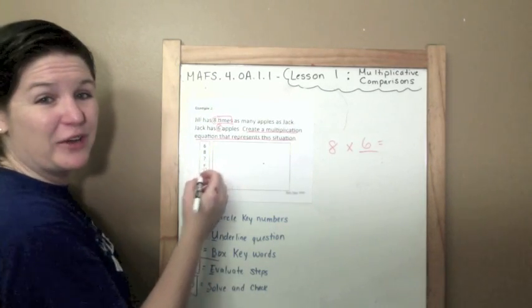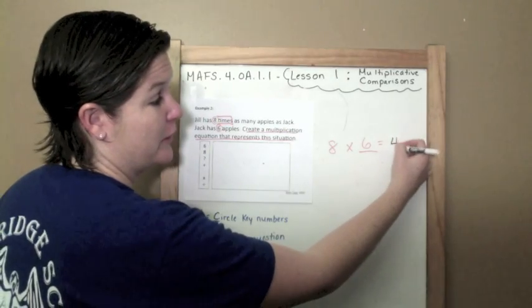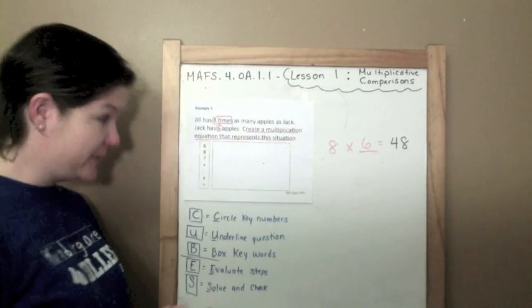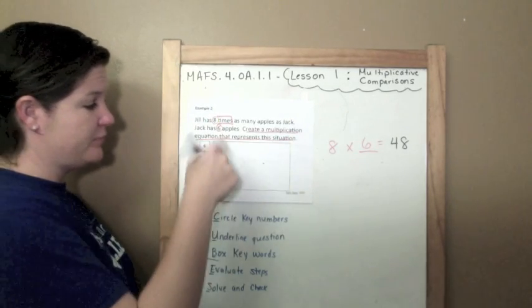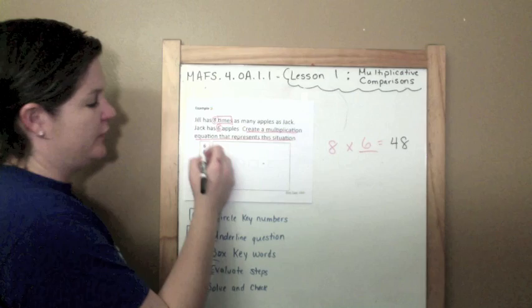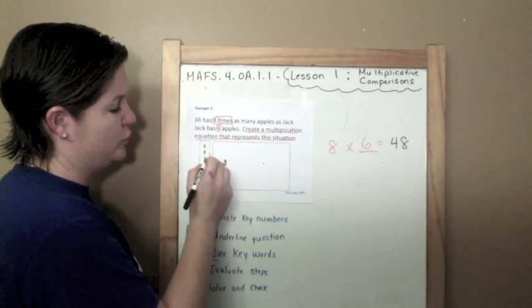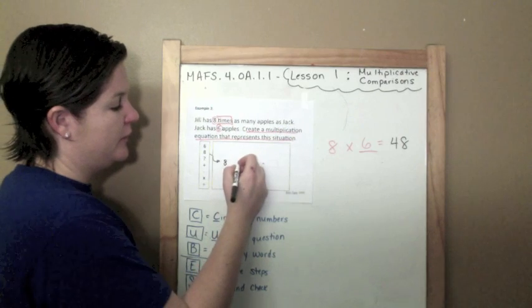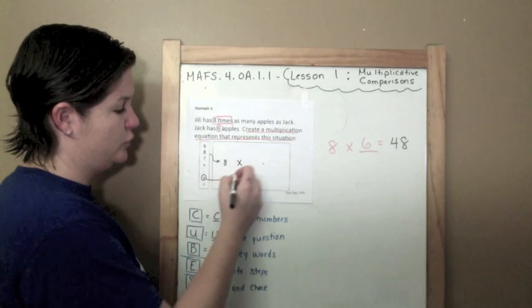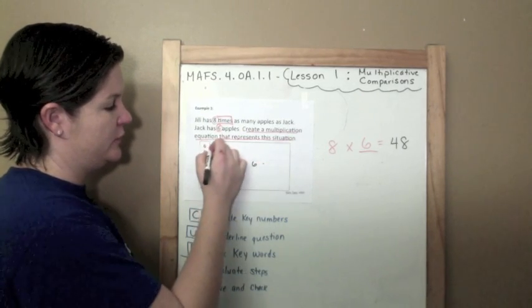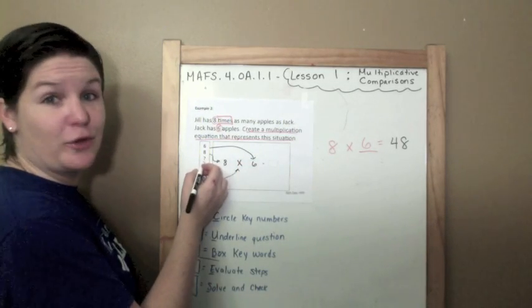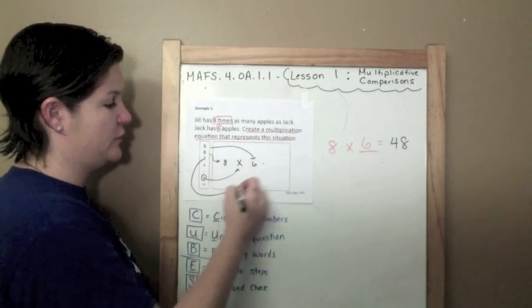So I already have my equation. I just have to—if you notice right here, I don't even have to figure out the product, which we know the product would be 48 because you're fluent with your multiplication facts. If you're not, you need to get on it. I'm telling you, you need it for life. So now I'm going to drag these numbers over here. Eight would go in this first box. My multiplication symbol would go in that circle. Six would go in this box. Drag and drop. And I don't have 48, but I do have my unknown, which I was trying to figure out, so my question mark is going to go into this box.